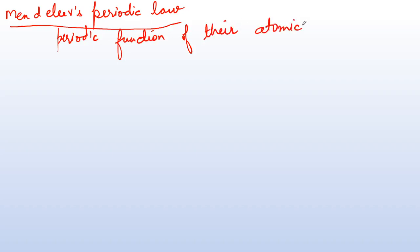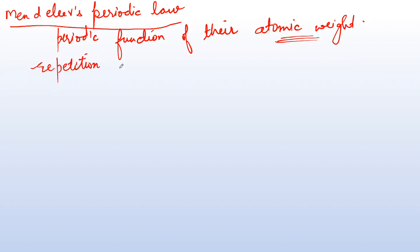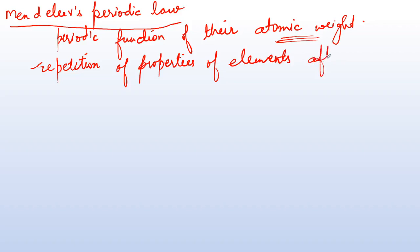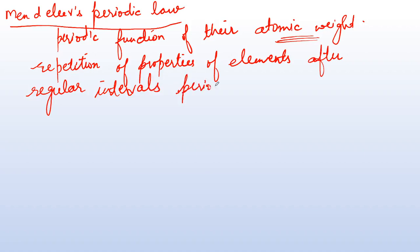What is the repetition of properties? The repetition of properties of elements after certain regular intervals — we call it periodicity. After certain regular intervals, there is periodicity of properties. You have to remember these two rules relating to Mendeleev's periodic law.